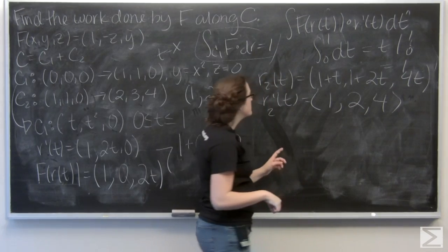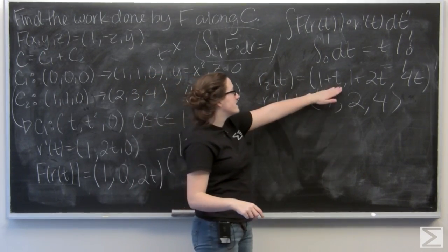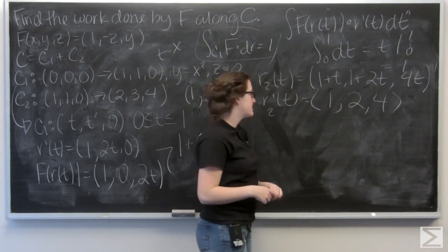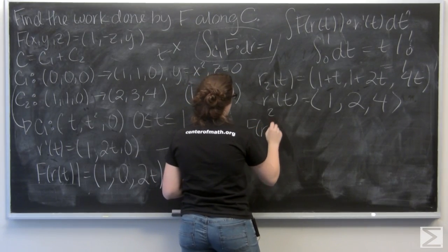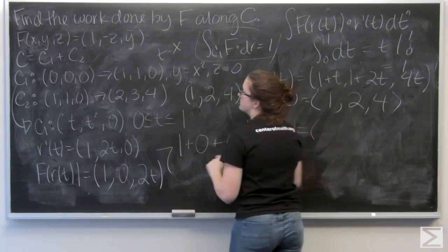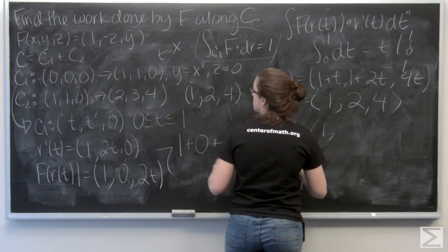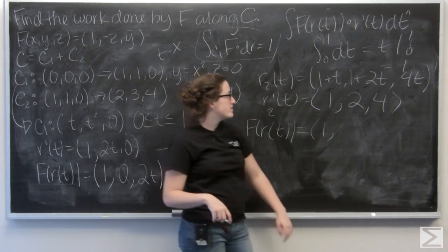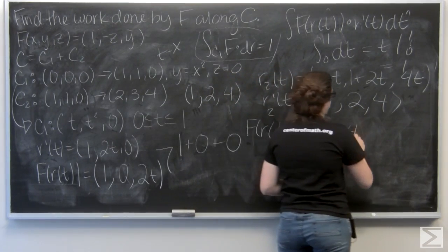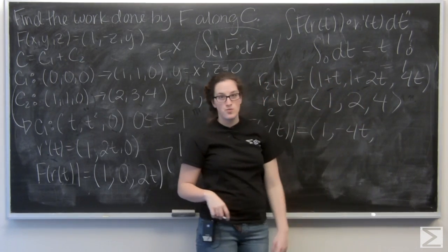Now, let's find f of r of t. We know the drill. Plug this in where I see an x, plug this in where I see a y, and this in where I see a z. So, the first component in f is 1, so that just stays the same. My next component is negative z, so that means negative 4t. And my third component is y, so 1 plus 2t.